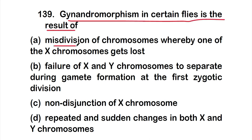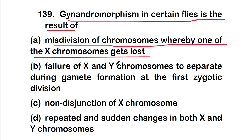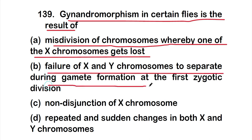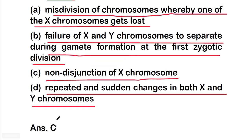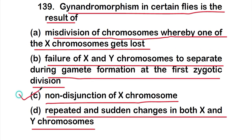Question 139: Gynandromorphism in certain flies is the result of option A - misdivision of chromosome whereby one X chromosome gets lost, option B - failure of X and Y chromosomes to separate during gamete formation at the first meiotic division, option C - non-disjunction of X chromosome, or option D - repeated and sudden changes in both X and Y chromosomes. The right answer is option C, non-disjunction of X chromosome.